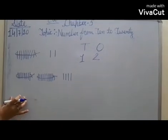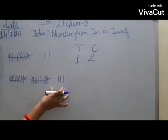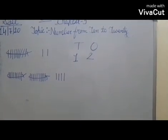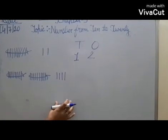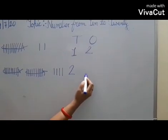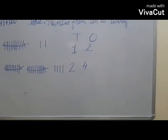Here there are 2 bundles of 10 sticks and 4 loose sticks. So there are 2 bundles of sticks. So here we write 2 tens, 4 ones.